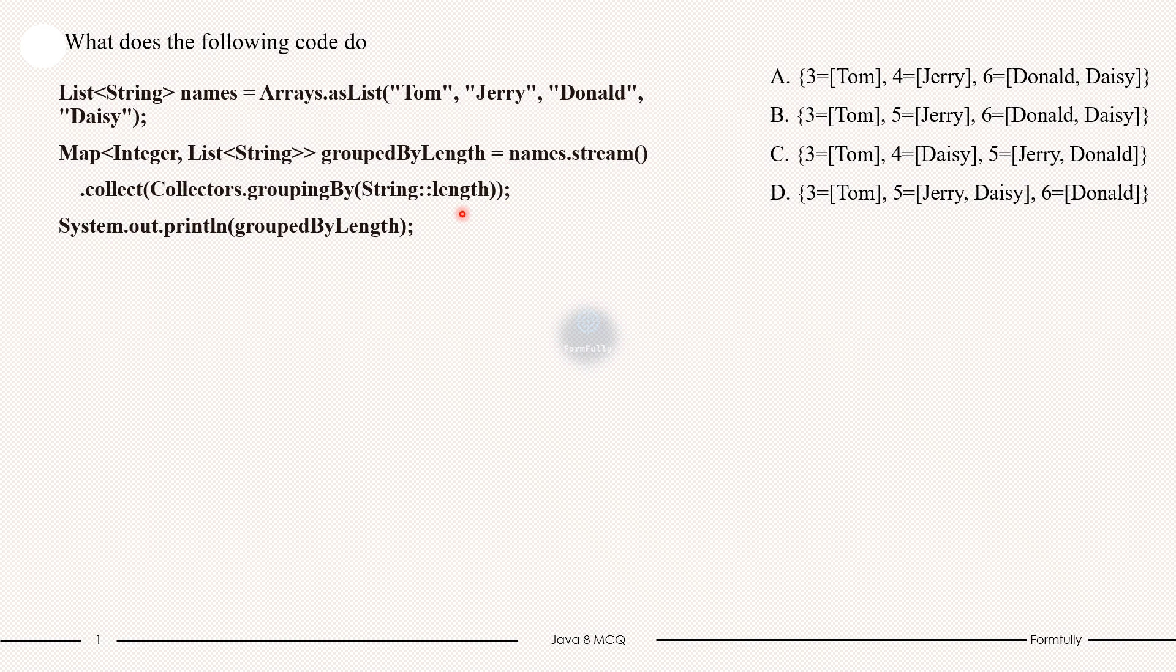For example, here Tom is a name with three letters, then Jerry and Daisy are names with five letters, and Donald is a name with six letters. Printing the grouped map, we print the result which will display a map that groups the names by their length. So the output will look like: 3: [Tom], 5: [Jerry, Daisy], 6: [Donald]. So the correct option is option D.